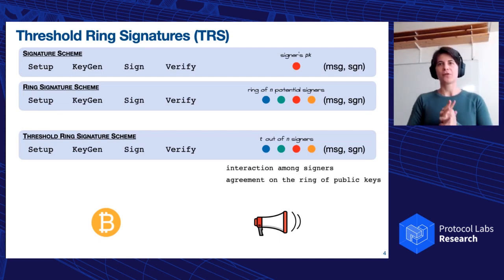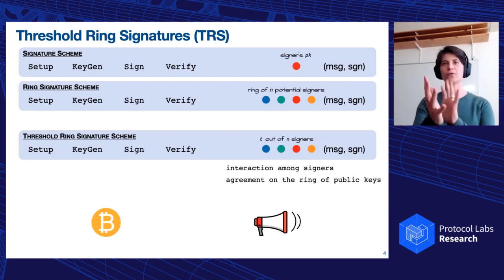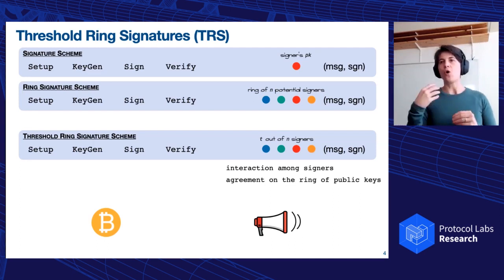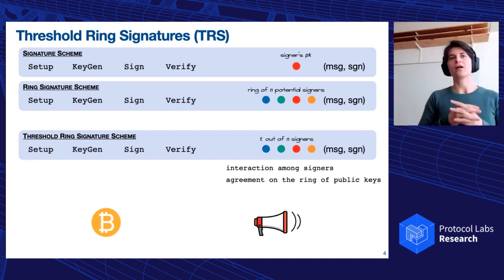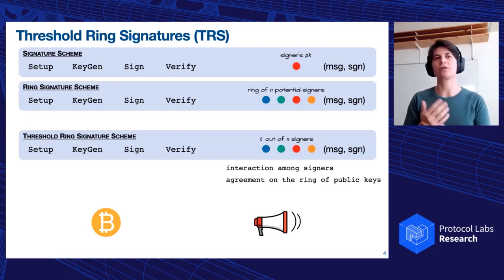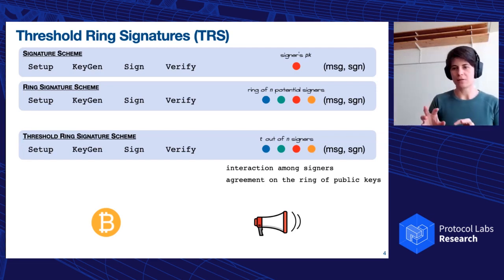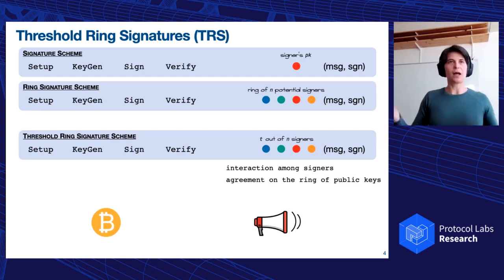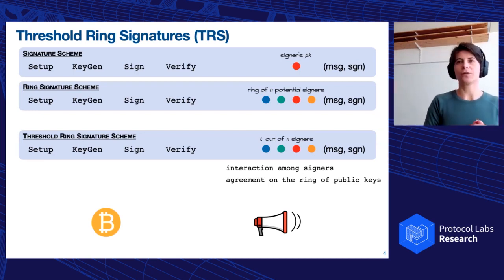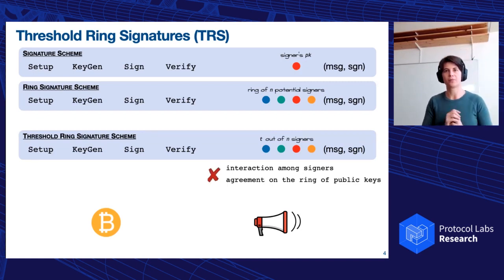A couple of years later, in 2002 at crypto, there has been the first scheme of threshold ring signature proposals. The algorithms are exactly the same, except that now instead of having one potential signer out of n public keys, we have t people that sign out of n possible signers. And this is very important in, for instance, whistleblowing, or if I want to have some threshold cryptography, even in Bitcoin, maybe I want to have two factor authentication, two devices that sign the same transaction, but I don't want people to know exactly which combination of two devices I'm using. So this is all cool and amazing. But there are a couple of shortcomings.